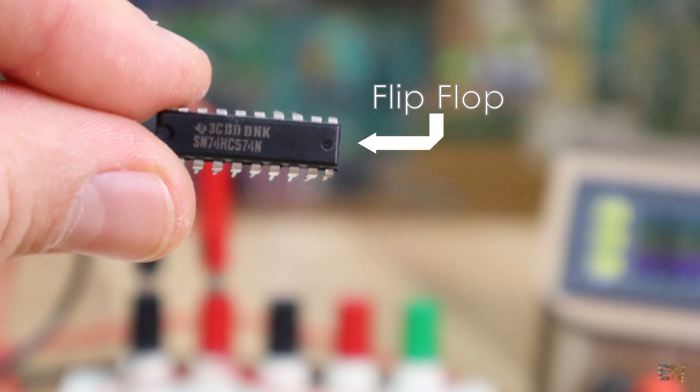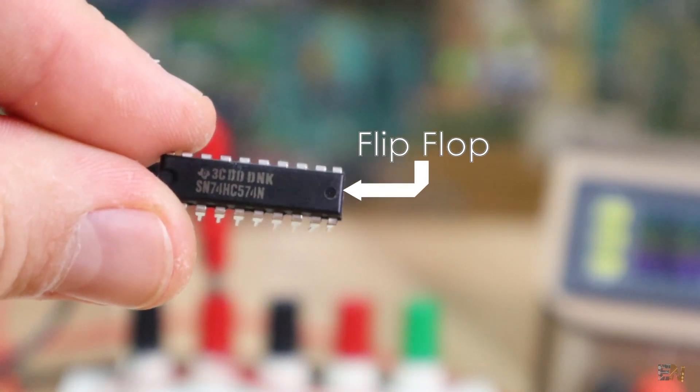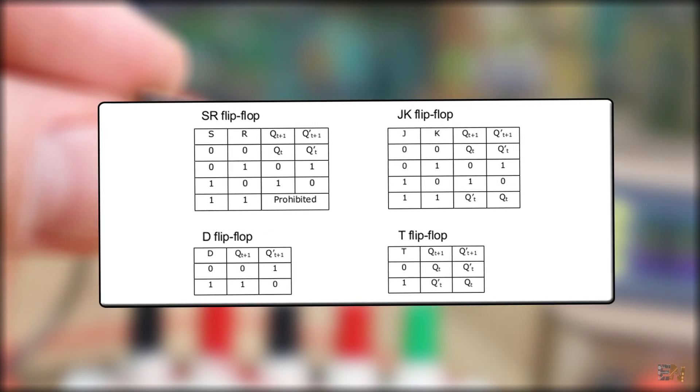So here I have the 74HC574N chip and this is a so called flip-flop. We have 4 basic types of flip-flops. We have the set reset one or so called SR, we have the JK, the D and the T and these are the excitation tables for each one of them.